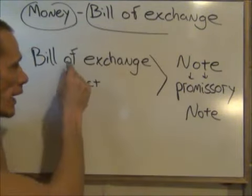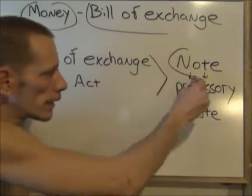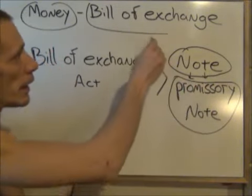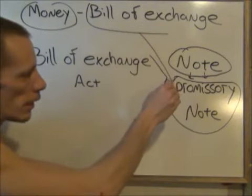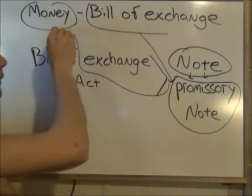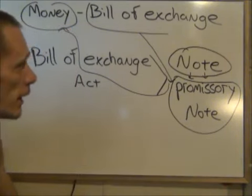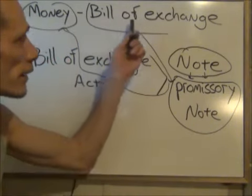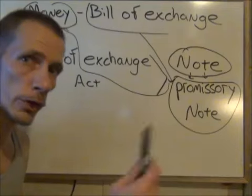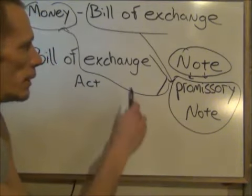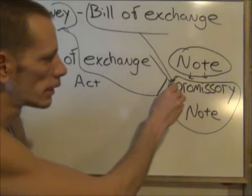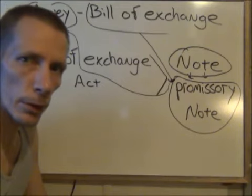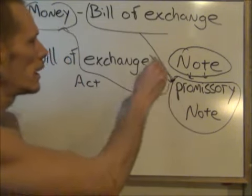According to the Financial Administration Act, money is any bill of exchange. When you jump into the Bills of Exchange Act, you'll see that a note — what they title to be a note — means a promissory note. So your bill of exchange, in the form of a promissory note, is actually money. It's pretty clear, because they say any negotiable instrument is to be considered money, and a bill of exchange is a negotiable instrument. So when you sign a promissory note or a loan agreement with the bank, you are creating money.